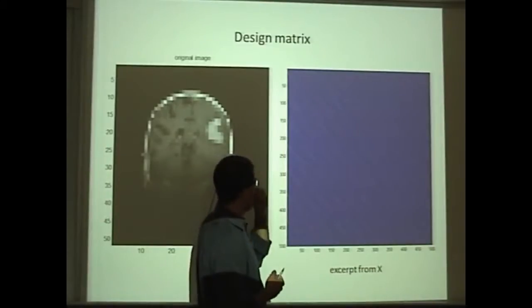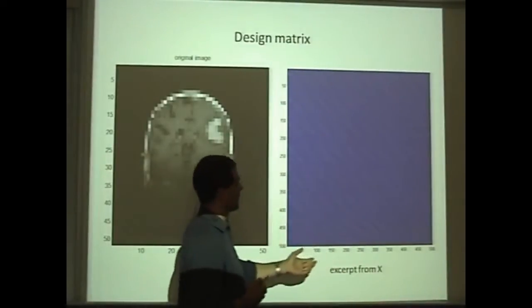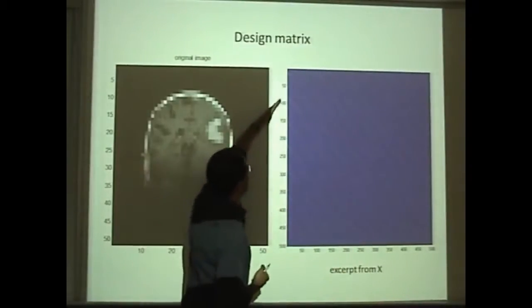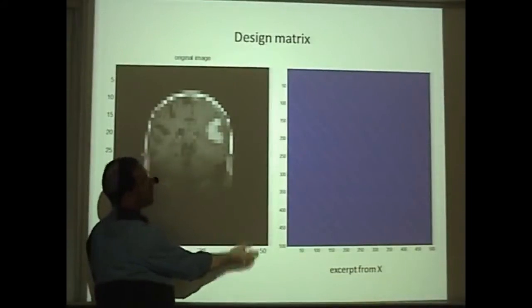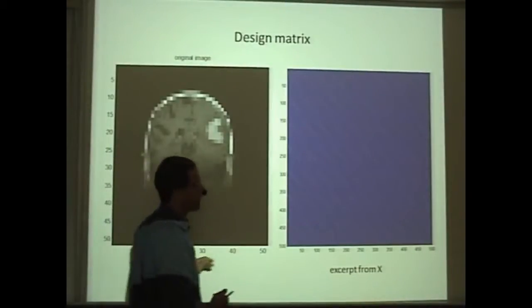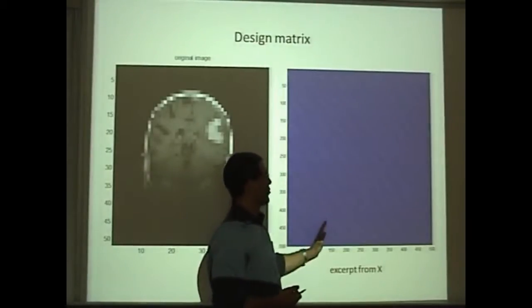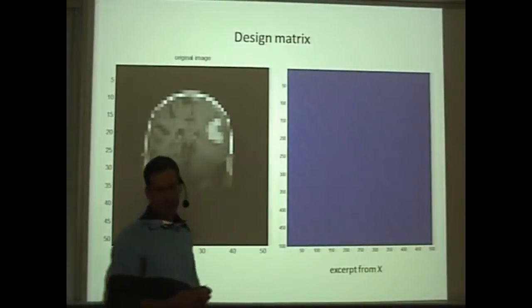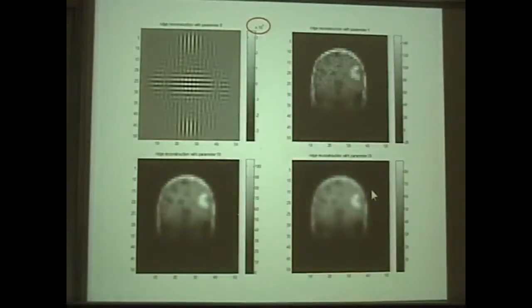Design matrix just talks about the geometry of my rays relative to the pixels of the image that I want to reconstruct. And importantly, this matrix is very sparse. So, you know, if I have a ray, it does not intersect most of the pixels in my image. This is why in my design matrix here, for each ray, I get very many zeros. And this is why this iterative algorithm called algebraic reconstruction technique becomes efficient because it needs the sparsity in this matrix.